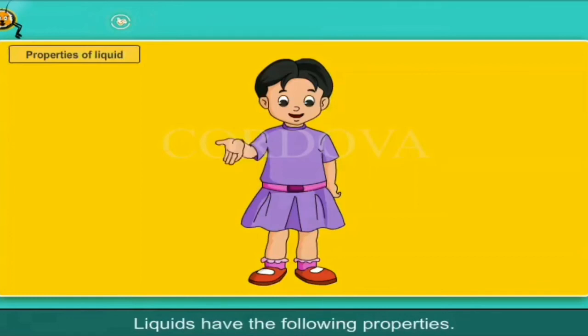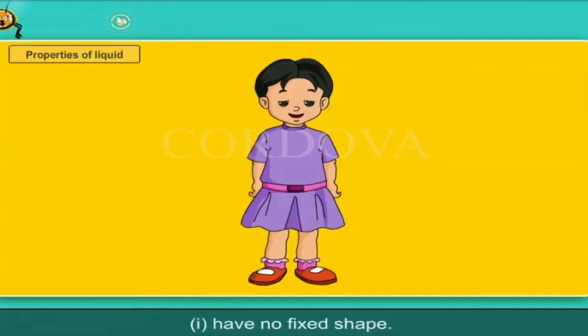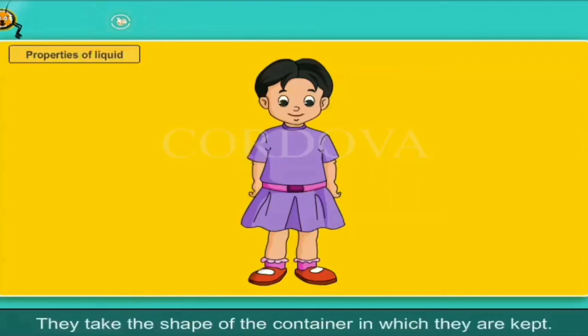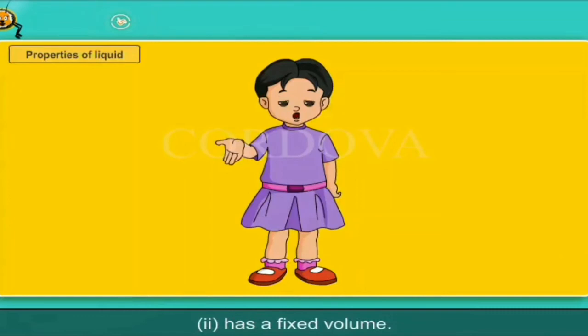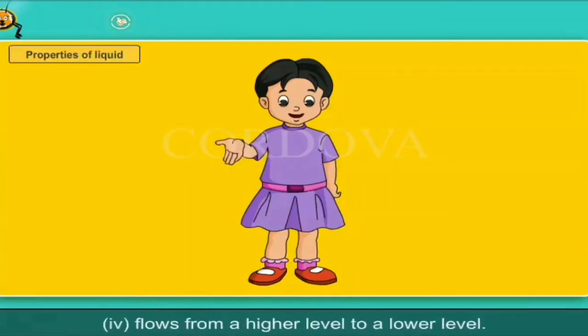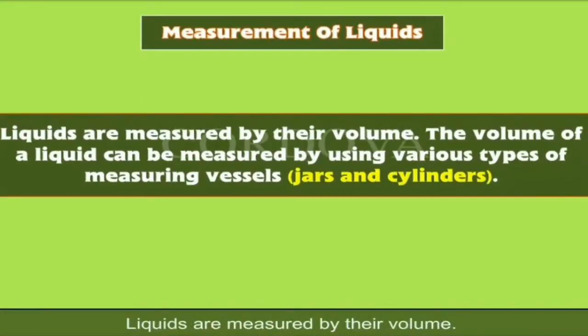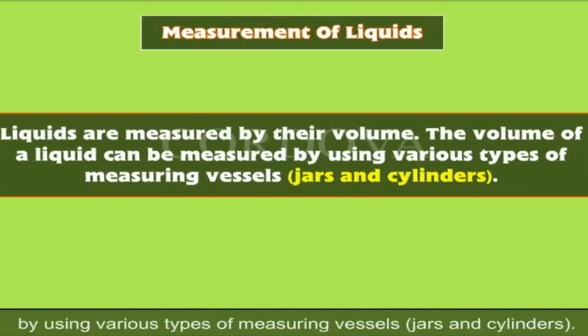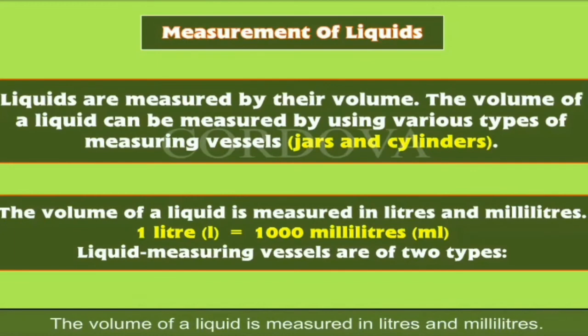Liquids have the following properties: it has no fixed shape and takes the shape of the container in which it is kept; it has a fixed volume; it is not hard; it flows from a higher level to a lower level. Measurement of liquids: liquids are measured by their volume. The volume of a liquid can be measured using various types of measuring vessels, jars and cylinders. The volume of a liquid is measured in litres and millilitres.